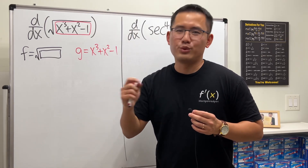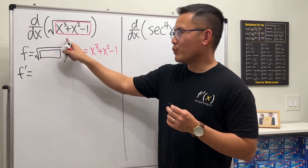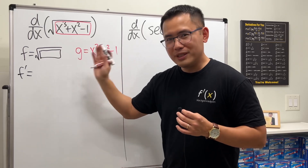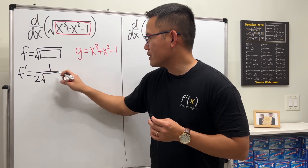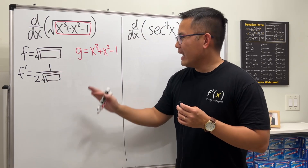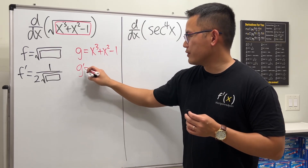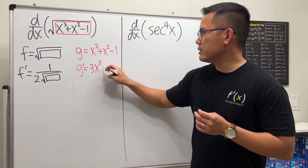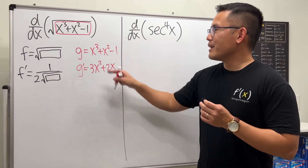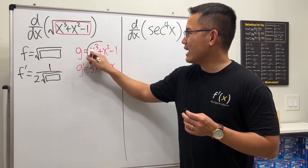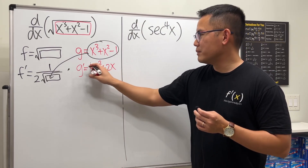Ask yourself: what's the derivative of the square root of a box? It's one over two square root of a box. So f prime is one over two square root of a box. Then focus on g and take the derivative: g prime is just going to be 3x² + 2x — two terms. Now we're going to put g inside the box and then multiply by g prime.